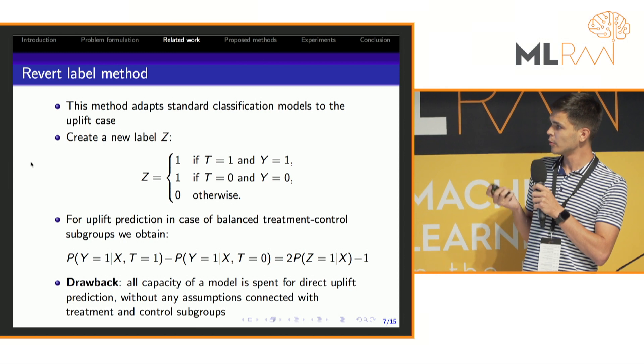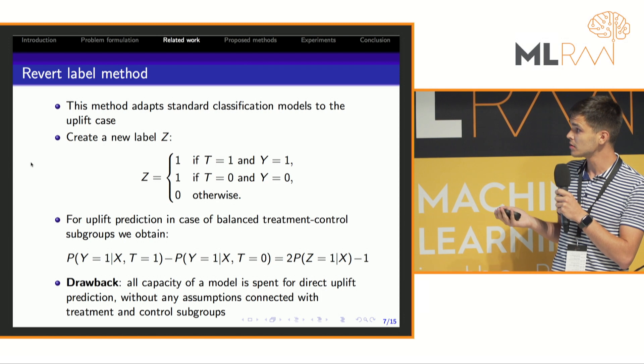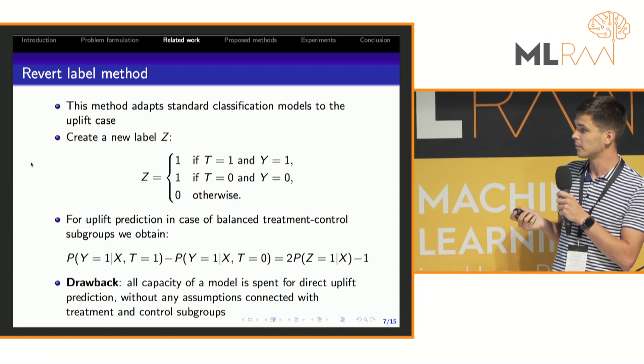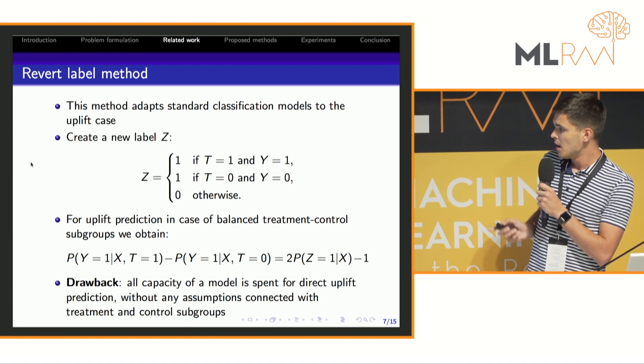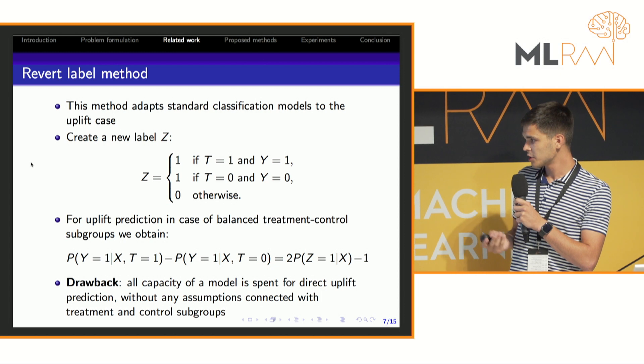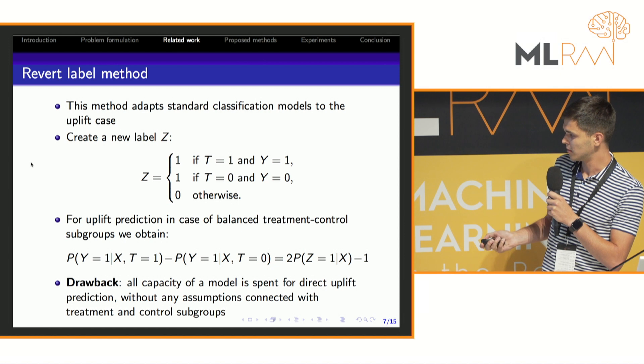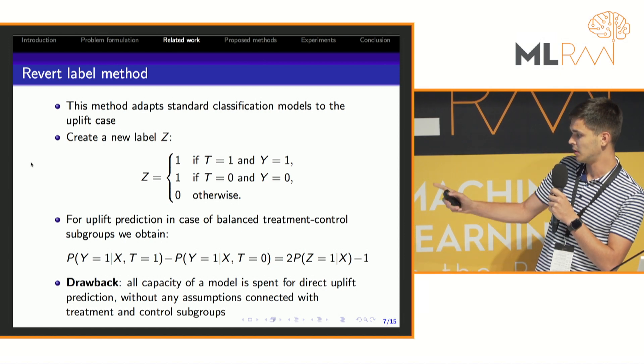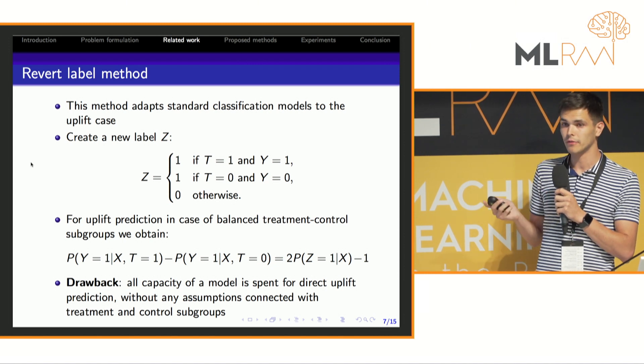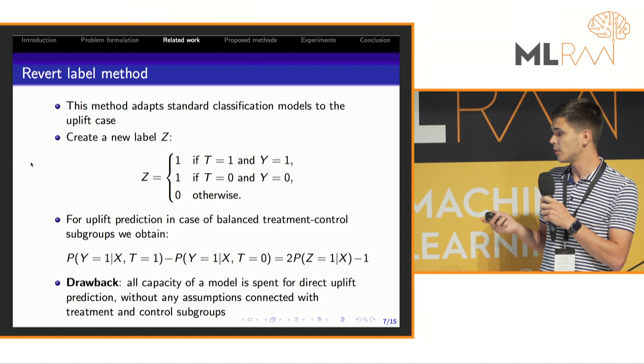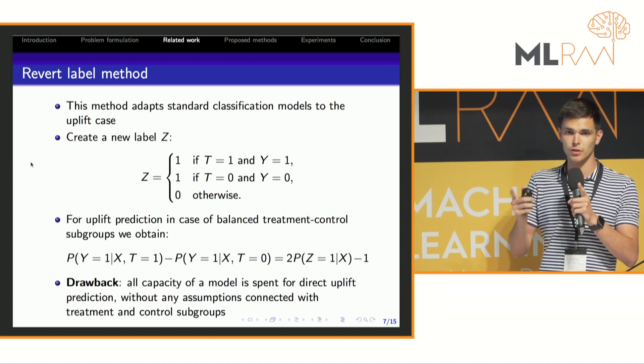Using the reward label method, one can use basic classification models for the uplift prediction problem by creating the new label Z. For uplift prediction we obtain the formula with only new label Z, but all capacity of model is spent for direct uplift prediction without any conjectures of relation between treatment and outcome.